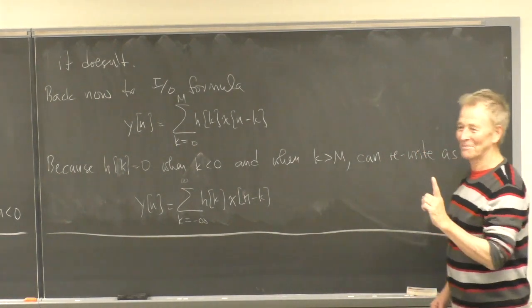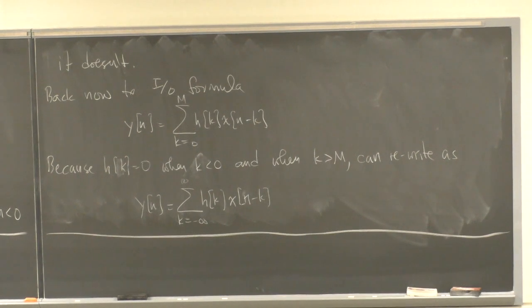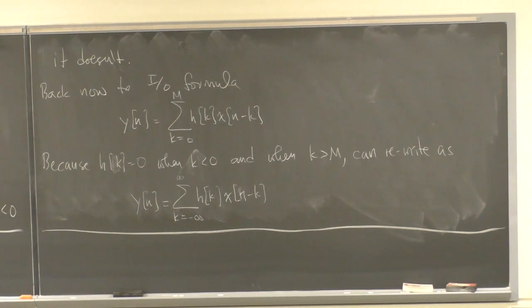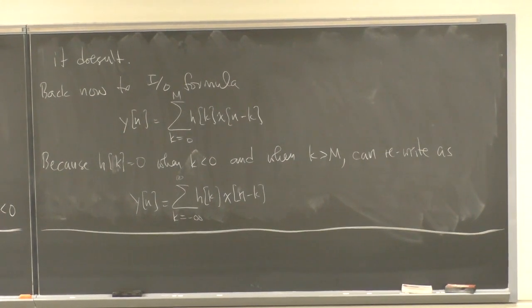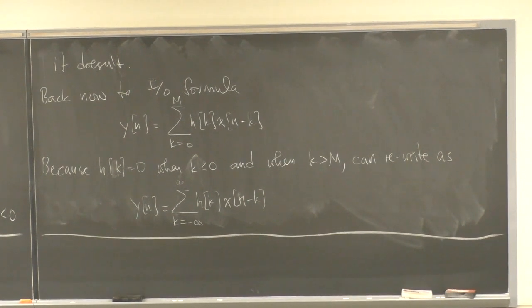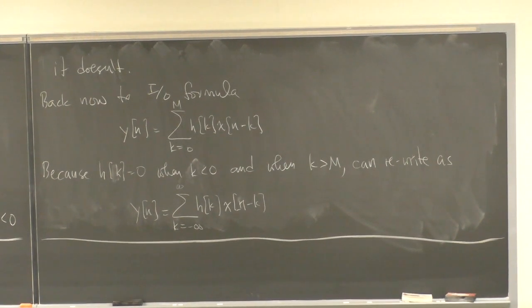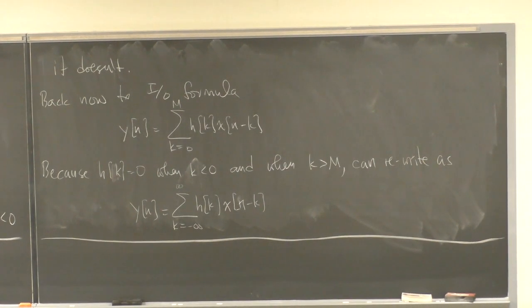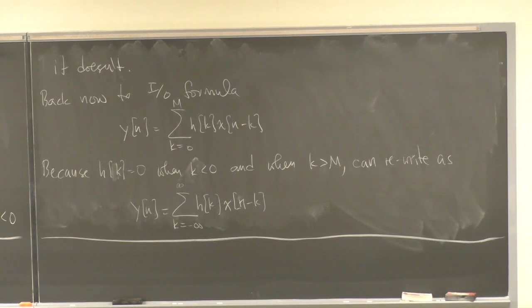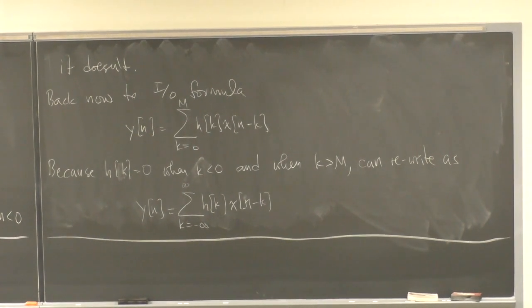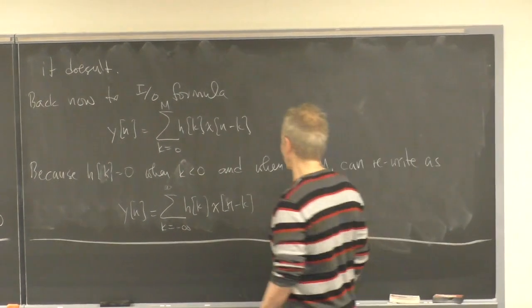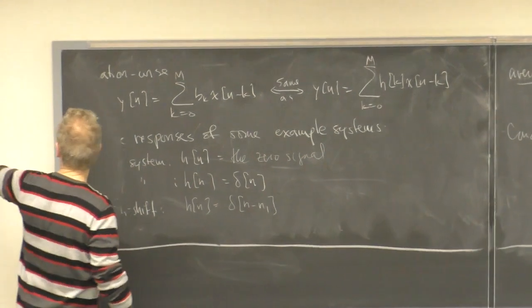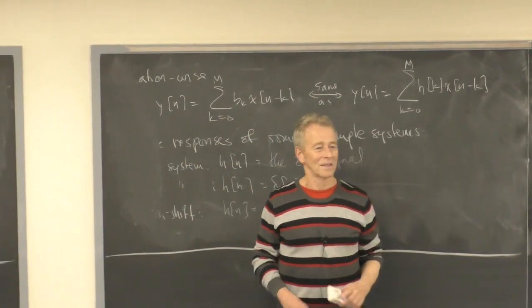This form is called discrete time convolution, and the integral form is continuous time convolution. We're going to take a short detour to talk about convolution. This expresses y of n as the convolution of h of n with x of n. By the way, the verb is 'to convolve' — you convolve things; you don't convolute them. So really that popular expression 'his explanation was convoluted' is technically wrong — you should say 'his explanation was convolved,' though no one would say that.